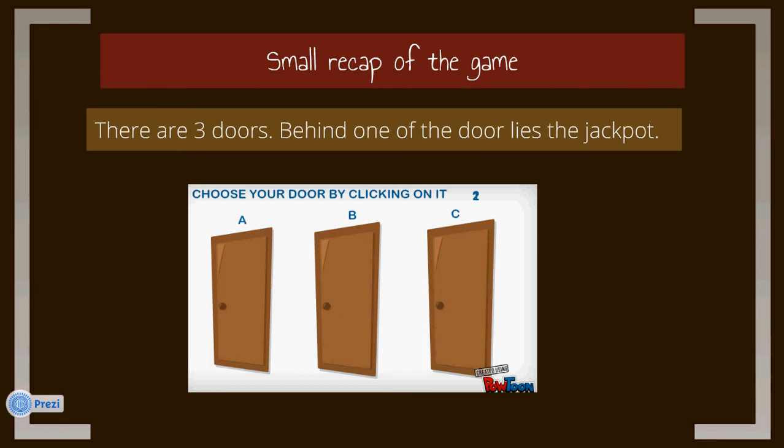Once you have chosen, the host shows you one of the remaining doors which is empty. For example, if you chose door A and the jackpot was behind door B, the host will show you door C and tell you that it's empty. Now in stage 2, you are asked to either stay with your original choice or switch.